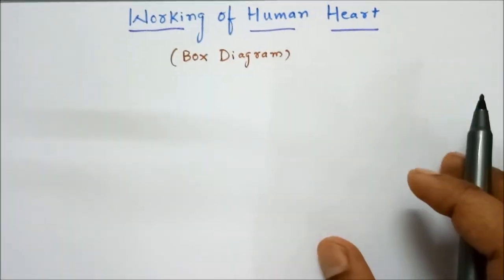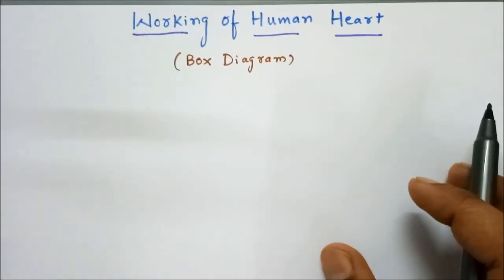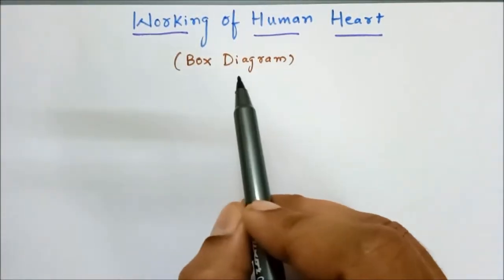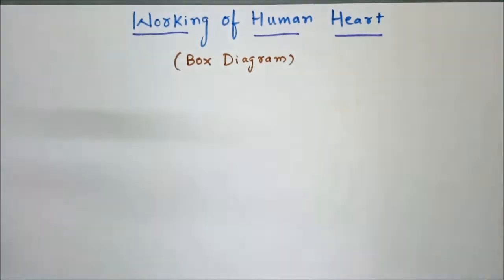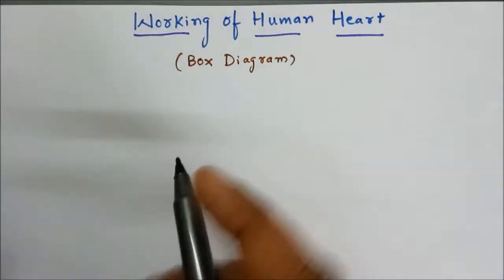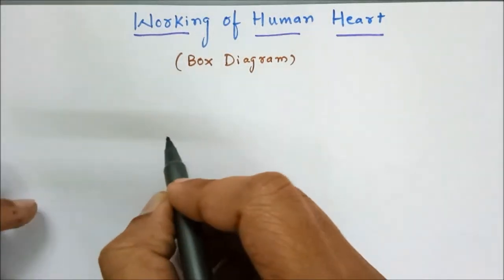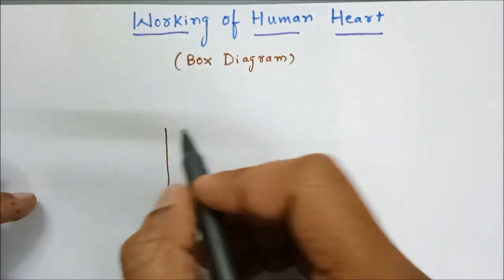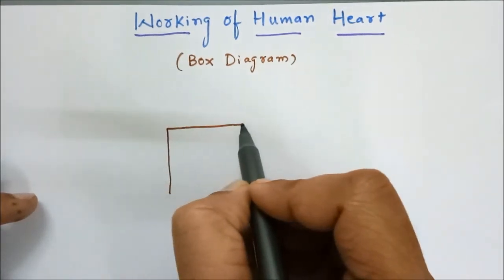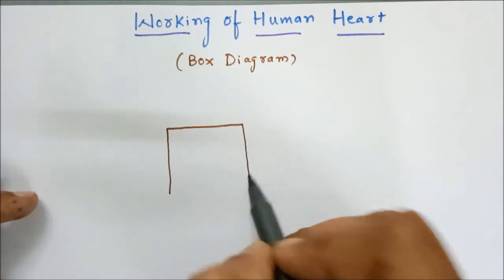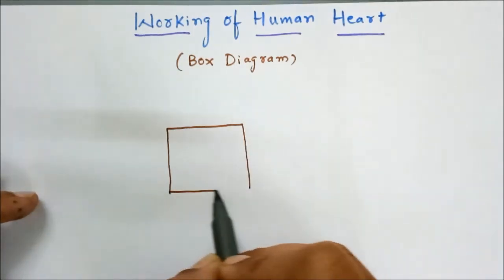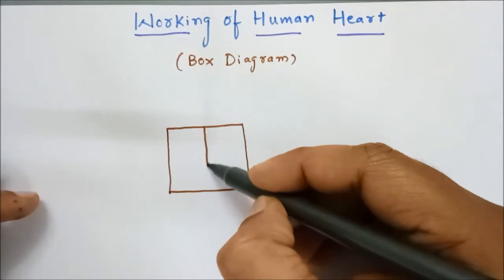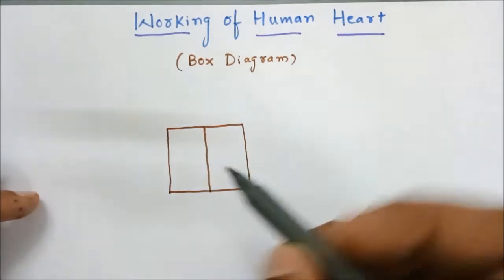Let us try to understand the human heart diagram with the help of a very simple box-type diagram. Here let us consider a box divided into four parts.